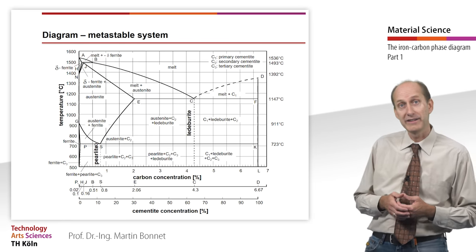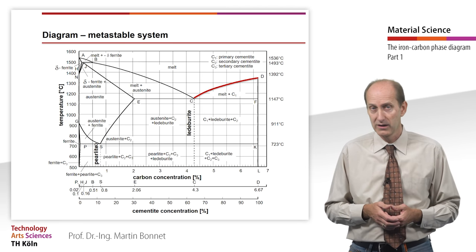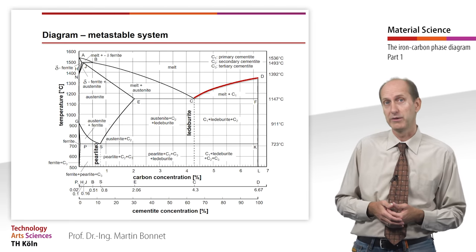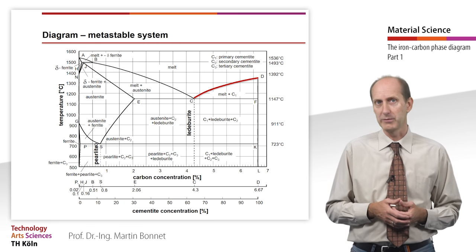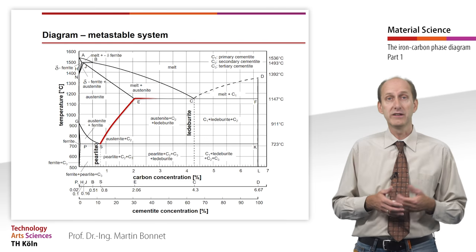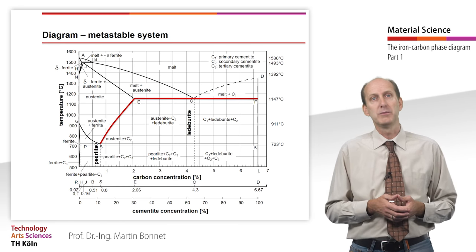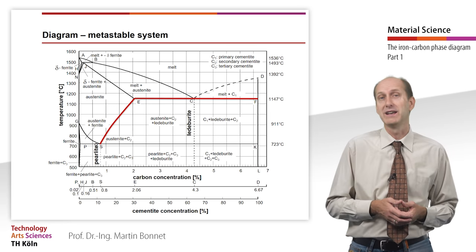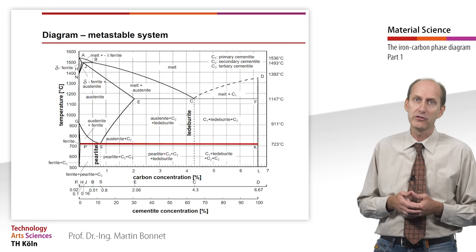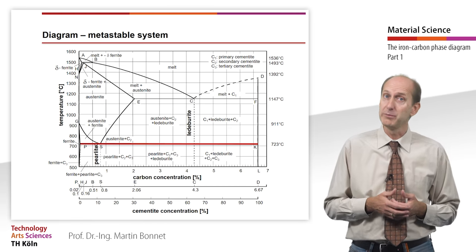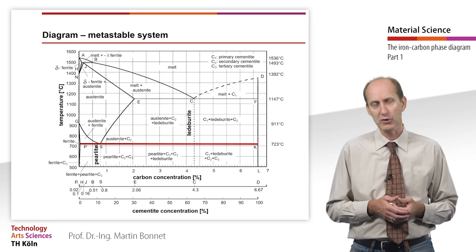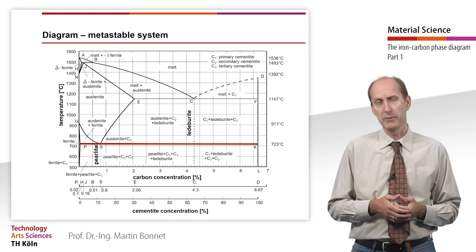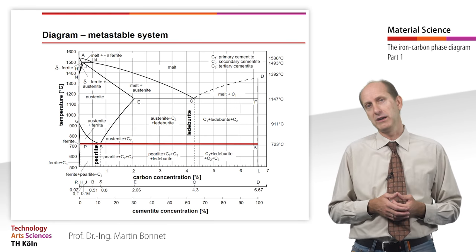This leads us to explain the different types of cementite. Cementite which crystallizes from the melt, that is to say below the line CD in the iron-carbon phase diagram, is called primary cementite or C1. Secondary cementite develops by precipitation out of the austenite, that is to say when the temperature drops below the line SEF. Tertiary cementite C3 precipitates out of the ferrite below the line PQK. Of course, the proportion of tertiary cementite can only be negligibly small, which is why it is sometimes left out completely in the literature.